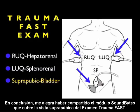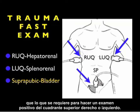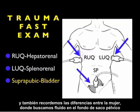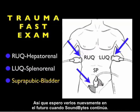In conclusion, I'm glad I could share with you this SoundBytes module covering the suprapubic view of the trauma FAST exam. This view is a very important one to add to the exam of your trauma patient, as we can potentially detect a smaller amount of fluid here within the pelvis than it takes to make a positive right upper quadrant or left upper quadrant view. Remember that this is a two-step exam — we'll be looking in both short and long axis configurations — and also remember the differences between the female, where we're looking into the pelvic cul-de-sac for fluid, and the male, where we're looking into the retrovesical space for fluid. I hope to see you back in the future as SoundBytes continues.